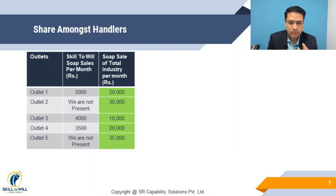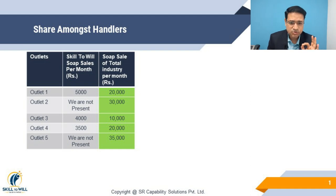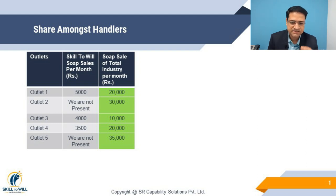Now let us understand this concept through an illustration. This illustration has data for 5 outlets. For each outlet, there are two pieces of data. Number one: how much of our soap sales is in the shop. Suppose we are soap manufacturers — our soap brand is Skill2will.